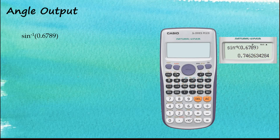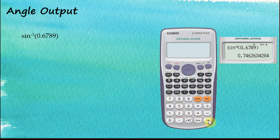To get the answer in gradients, go to shift setup again and choose option 5 for gradients, then press equal. That gives the answer in gradients. That is how we select the output unit for an angle.